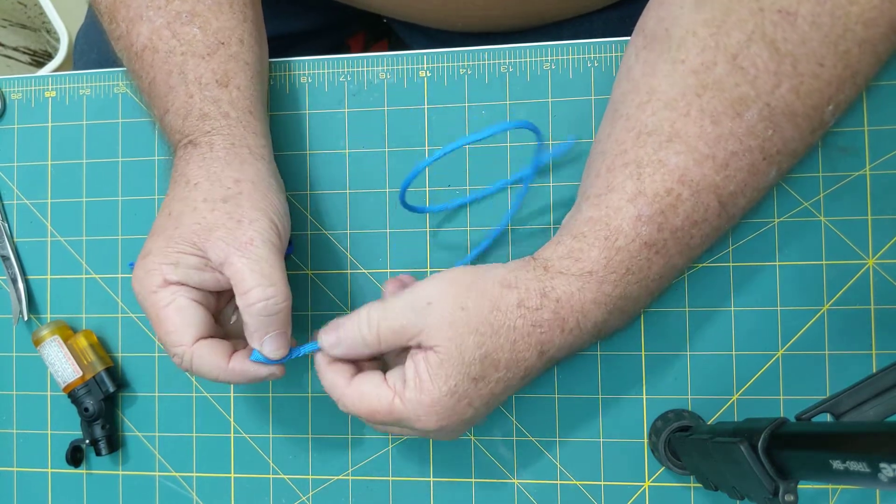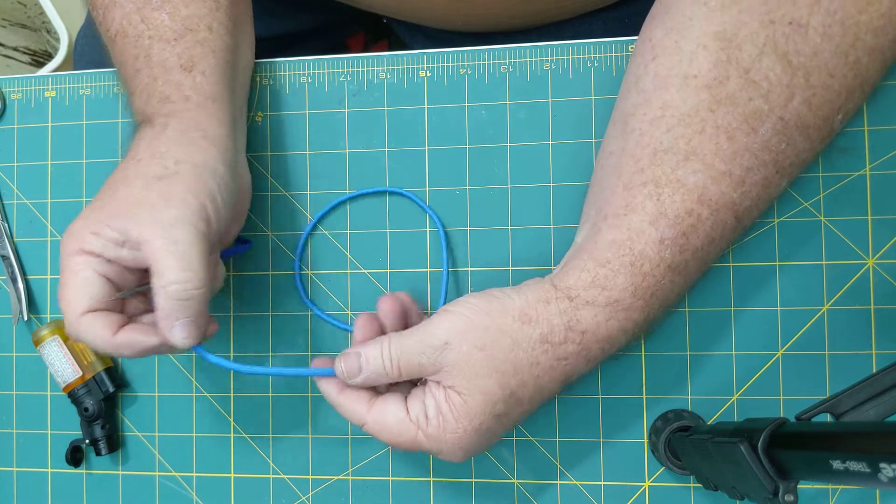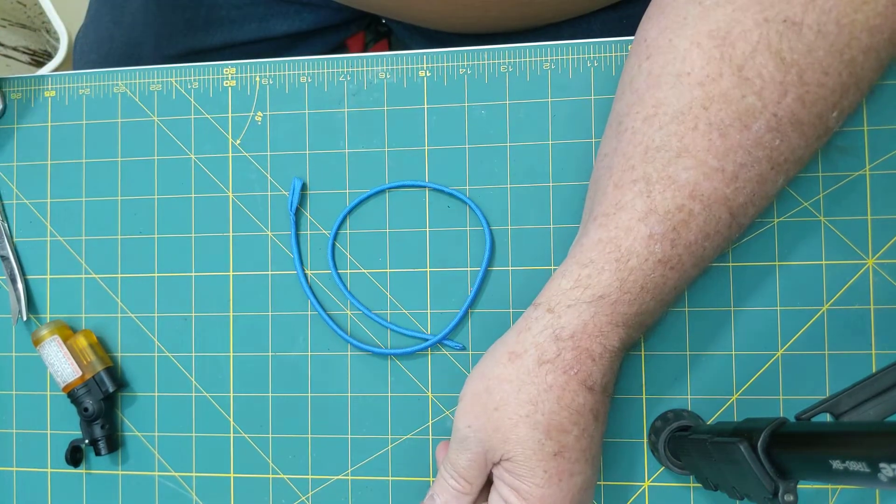Anyway, just some interesting things with some knot work and some paracord today. Again, this is Chuck with Pocket Snakes.